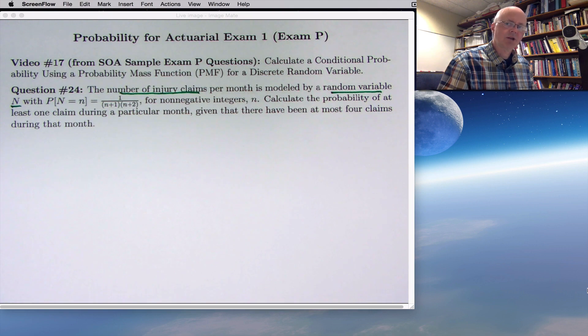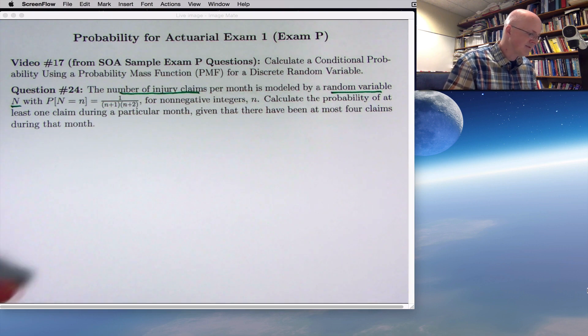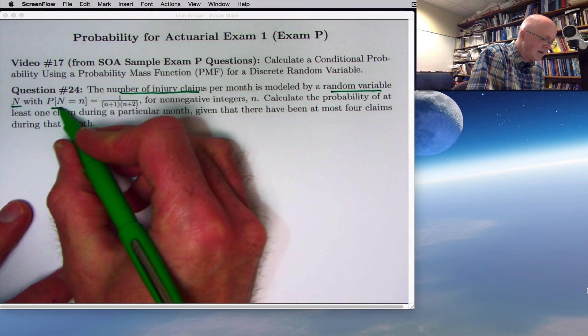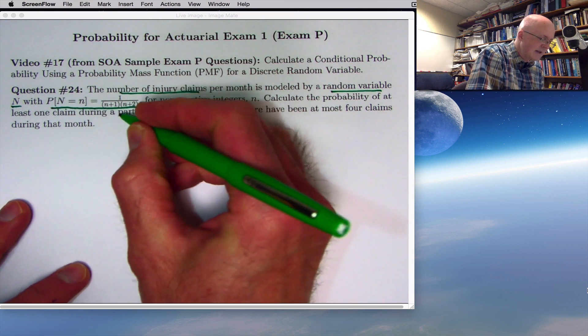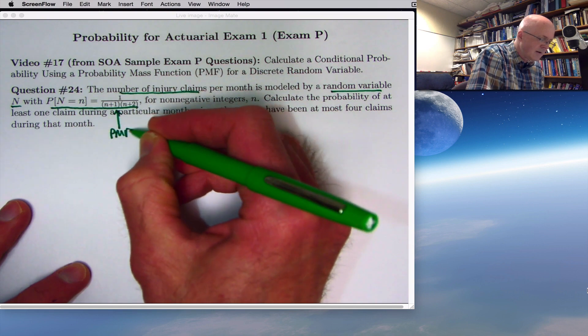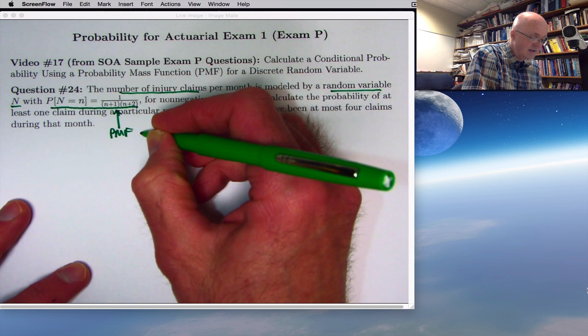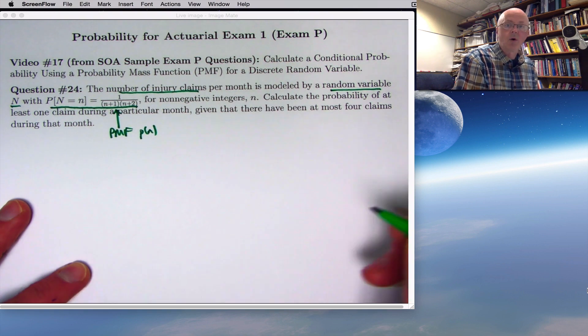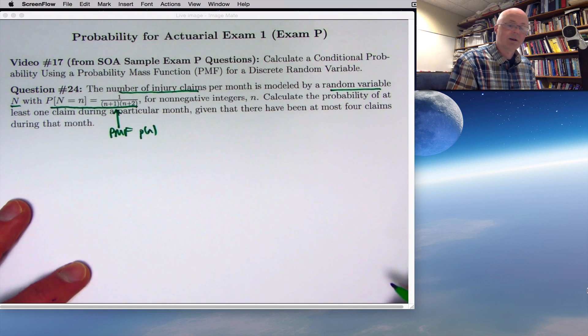The way they are determined by chance, in the so-called discrete case, is with a probability mass function. This equation right here defines a probability mass function, or PMF. I might give it a name. I might call it little p of n, or maybe little f of n.